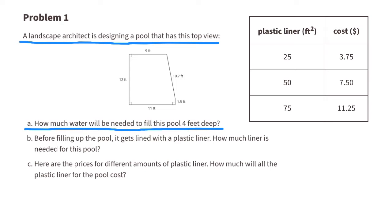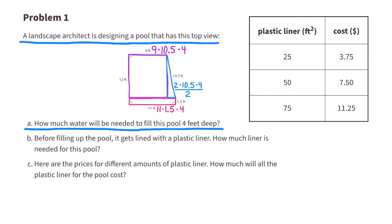Deconstruct this top view. This section has the dimensions 11 by 1.5 and it's four feet deep. This section has the dimensions 9 by 10.5 and it's also four feet deep. The last section is in the shape of a triangle with dimensions 2 by 10.5 by 4, and since it's a triangle we need to divide it by 2.